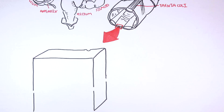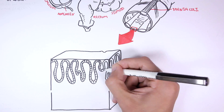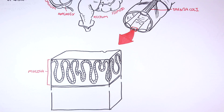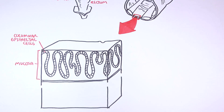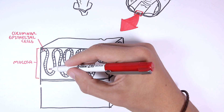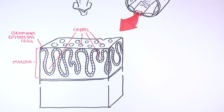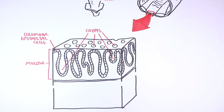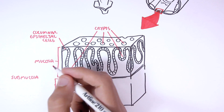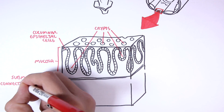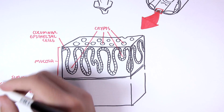Now let's look at the layers of the colon. The very top layer of the colon closest to the lumen is the mucosa layer. These are the colon cells, which are mostly columnar epithelial cells, and these cells form crypts. The next layer is the submucosa — sub as in below — so below the mucosa. The submucosa is the connective tissue layer that contains nerves, blood supply, and lymphatics.